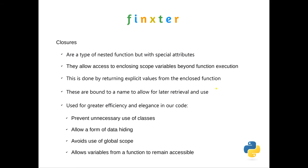So why would you use closures? They're effectively for efficiency and elegance in coding. If you had a class that only used one method beyond the dunder init method, you might choose to use a closure rather than that class. They also allow a form of data hiding — in a nested function, the only way to access the enclosed function is by calling the outer function. It also avoids the use of global scope, so you can define a variable in the outer function and utilize it in the enclosed function. And it allows variables from a function to remain accessible later in the program.